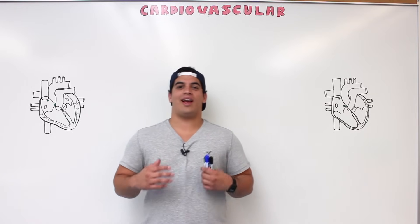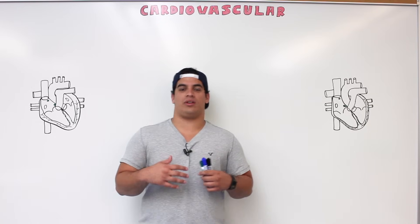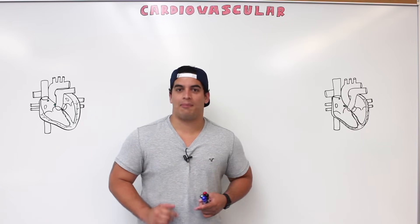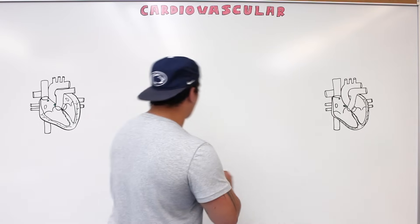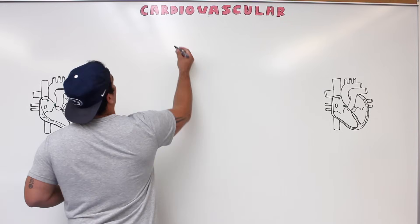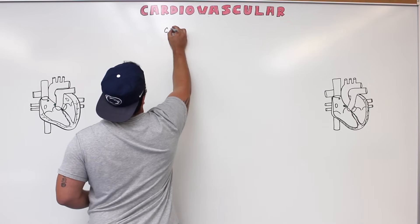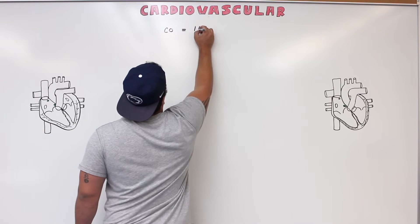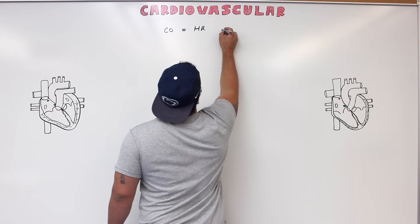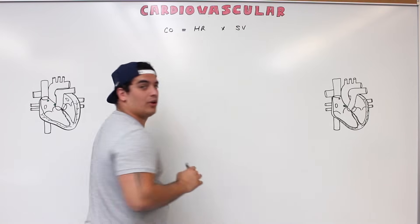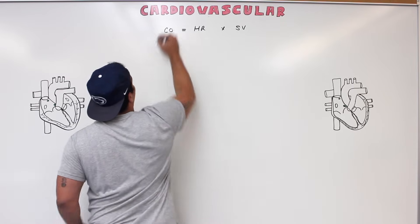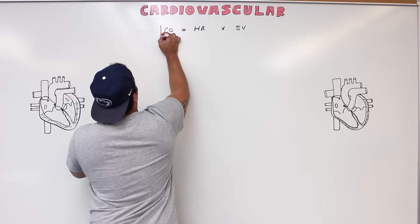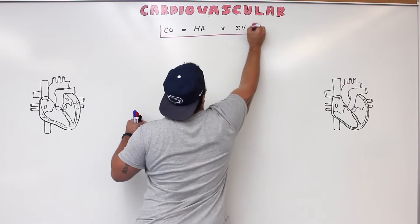In this video we're going to talk about cardiac output. Cardiac output is basically your heart rate multiplied by your stroke volume. We're going to denote cardiac output as CO, so CO is equal to your heart rate (HR) multiplied by your stroke volume.